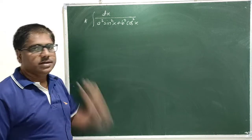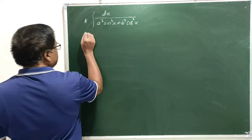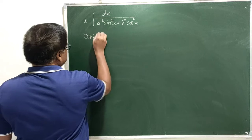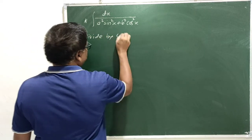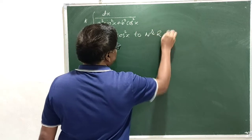In such forms, we divide by cos square x to numerator and denominator. Therefore, divide by cos square x to numerator and denominator.